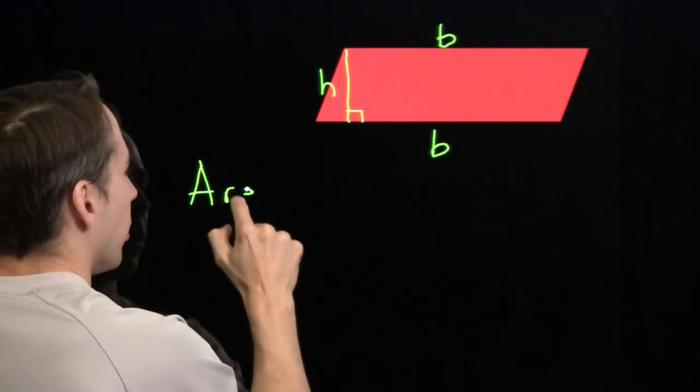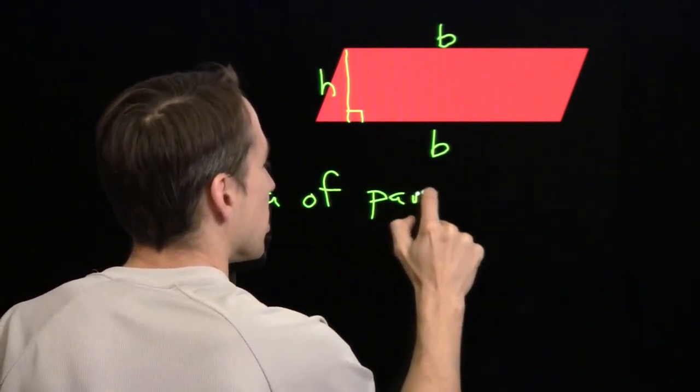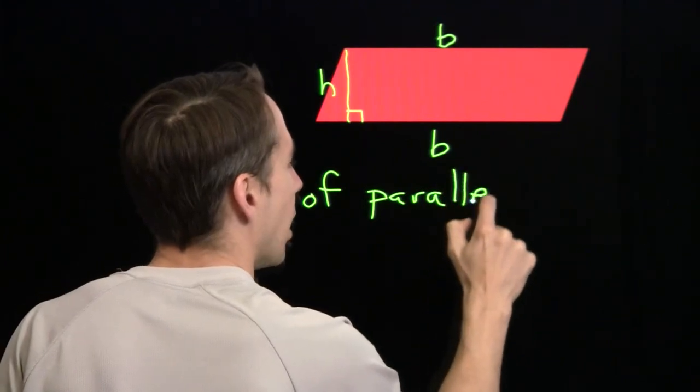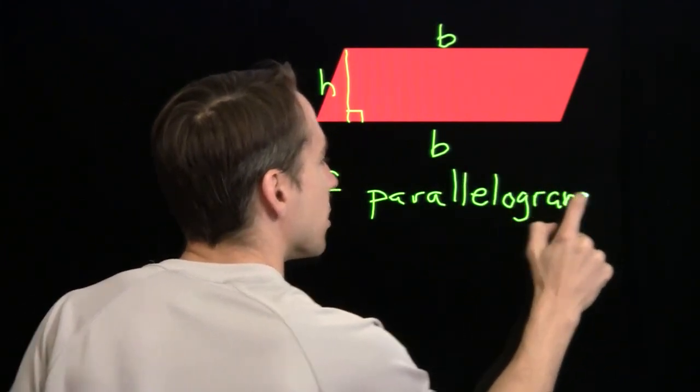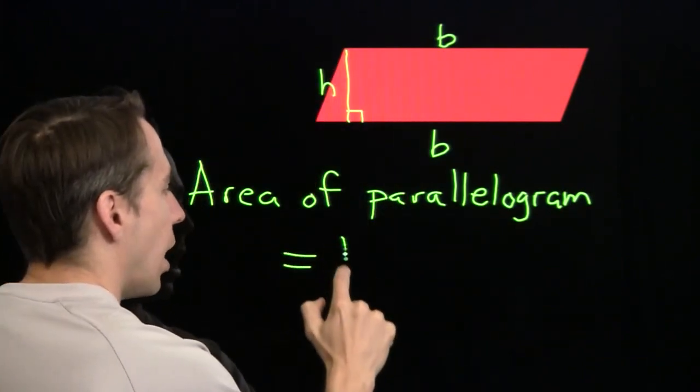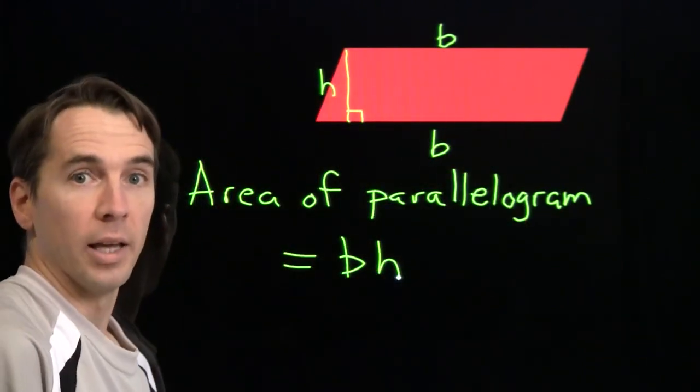So now we also see that the opposite sides of a parallelogram have the same length. All right, so we've got our area of a parallelogram now. It's just the base times the height. And the height is the distance between these opposite sides. And these opposite sides are equal in length.